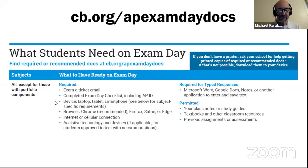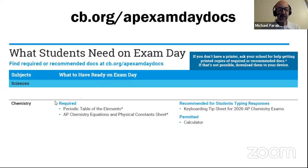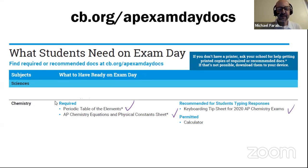On exam day, there are a variety of things you need besides your e-ticket. You'll need your device and a particular browser — Chrome, Firefox, Safari, or Edge are recommended — as well as a reliable internet or cellular connection. For AP Chemistry specifically, you'll need the periodic table of the elements, the equations and constants sheet, and there is also a keyboarding tip sheet if you choose to type and are concerned about formulas or dimensional analysis.